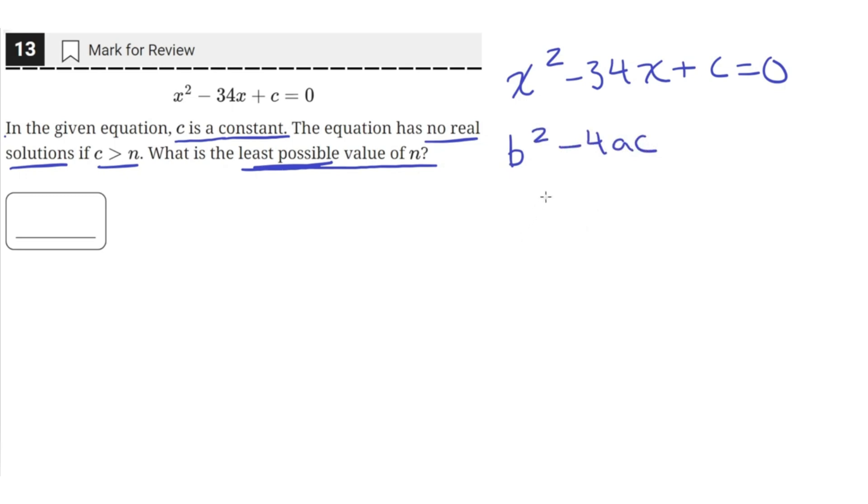So in this case the value of b is negative 34 since it's the coefficient of the x term. a is equal to 1 since it's the coefficient of the x squared term. There's an invisible 1 here. And c is just c in this case because we don't know the value of the constant.